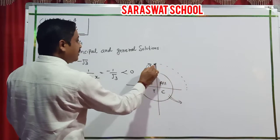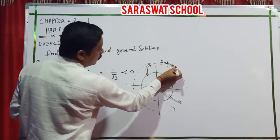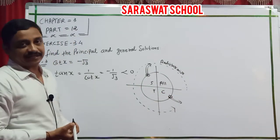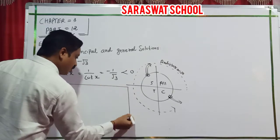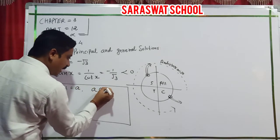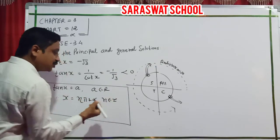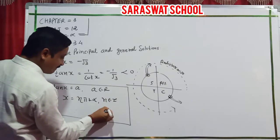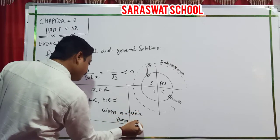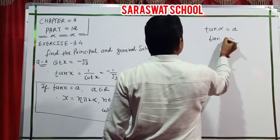I rotate anticlockwise and show the answer in both quadrants. The basic formula for tan x: if tan x equals a, where a belongs to R, the solution is x equals n pi plus alpha, where n belongs to Z, and alpha is tan inverse a — meaning tan alpha equals a. I apply that here.